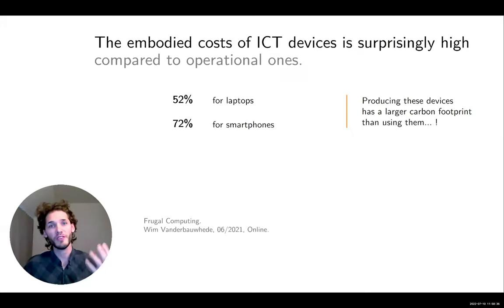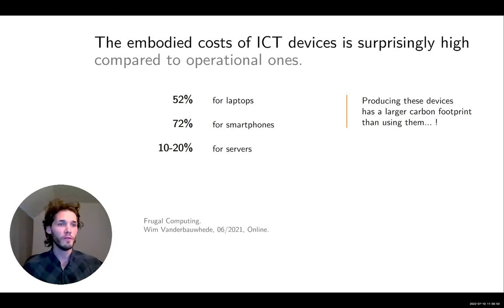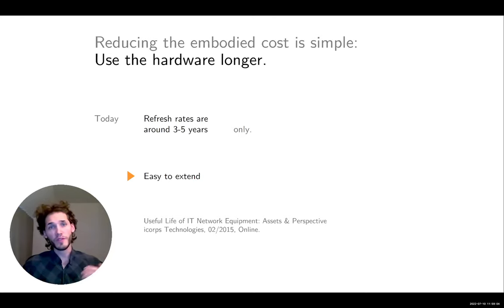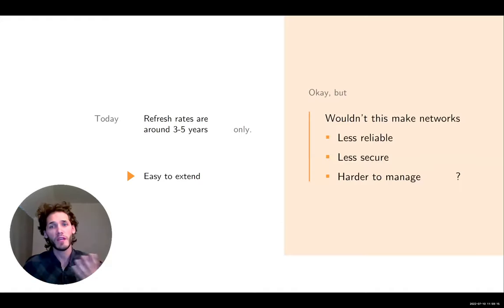Now about the embodied costs. The embodied costs of ICT devices are quite high — very high for commodity devices like laptops and smartphones. For servers, numbers in the literature vary around 10 to 20 percent. For networking devices like switches it's not so clear, but one could guesstimate it's in the same ballpark. Reducing those costs is simple: we only need to use devices longer. The refresh rate in today's networks tends to be between three to five years, and we can definitely do more.